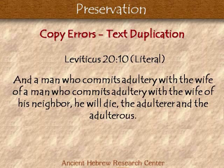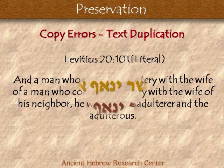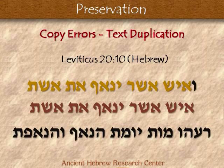Look at this portion: 'A man who commits adultery with the wife of a man who commits adultery with the wife.' It's a repeating — identical. This isn't Hebrew poetry. Hebrew poetry doesn't repeat the same thing twice; it repeats it two different ways. So it's not Hebrew poetry. Here's how it looks in the Hebrew: 'ish asher yinaf et eshet' — the yellow is identical to the brown: 'ish asher yinaf et eshet.' It's the same. Identical. No changes.